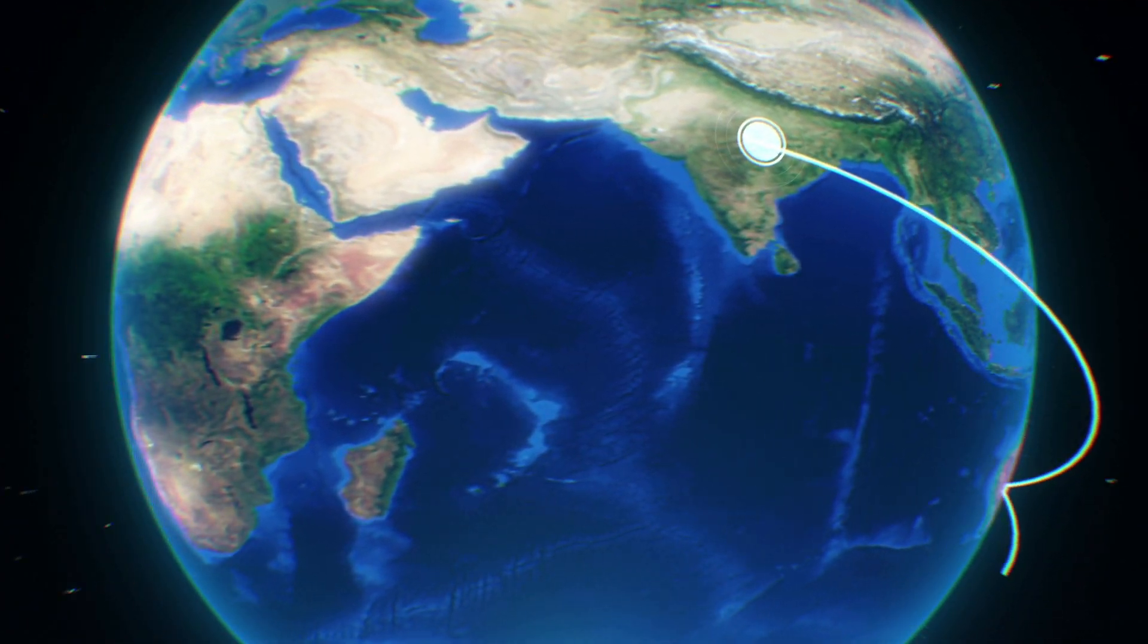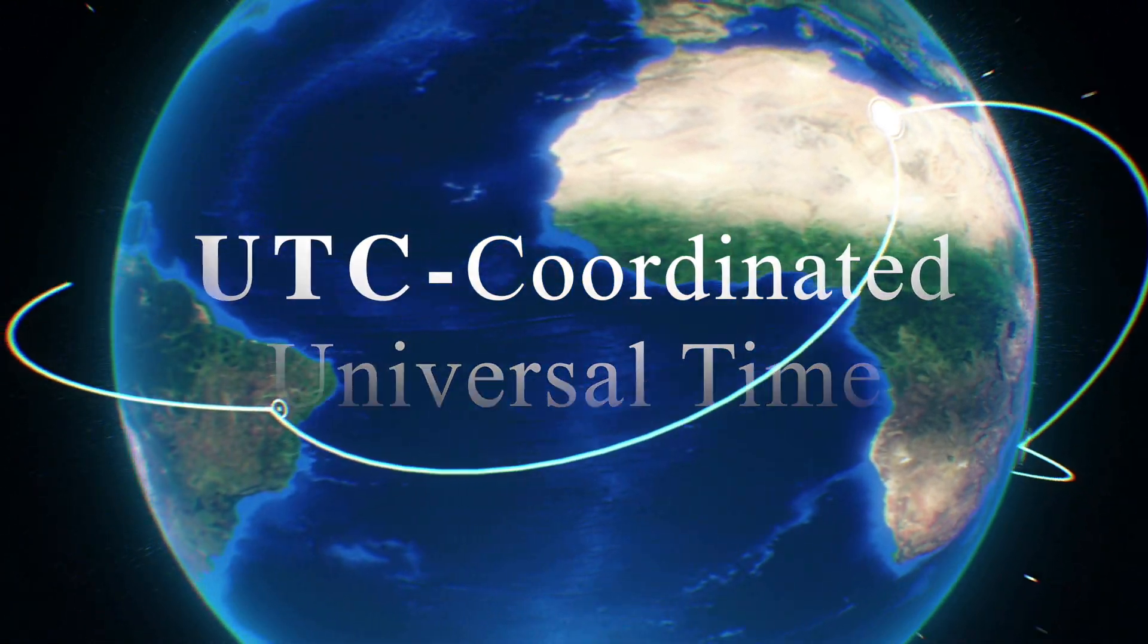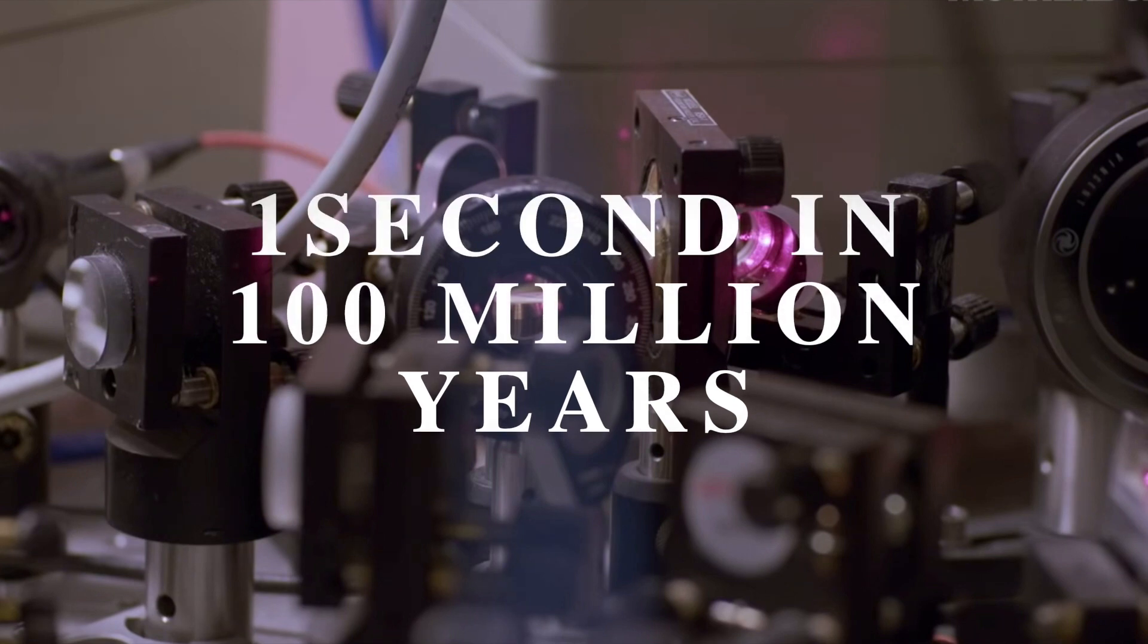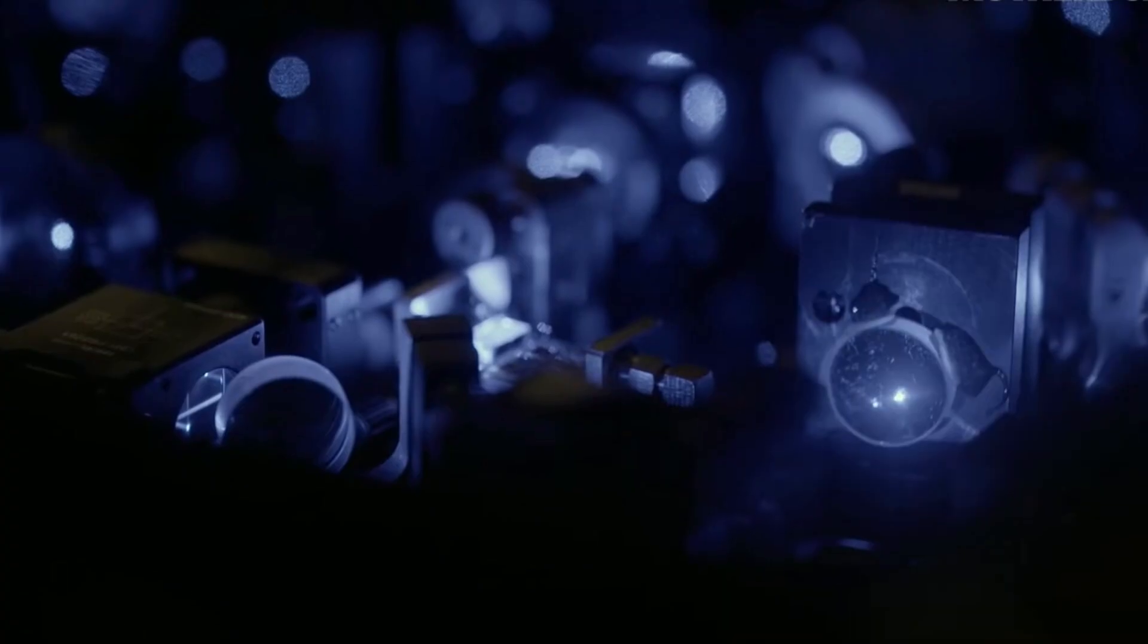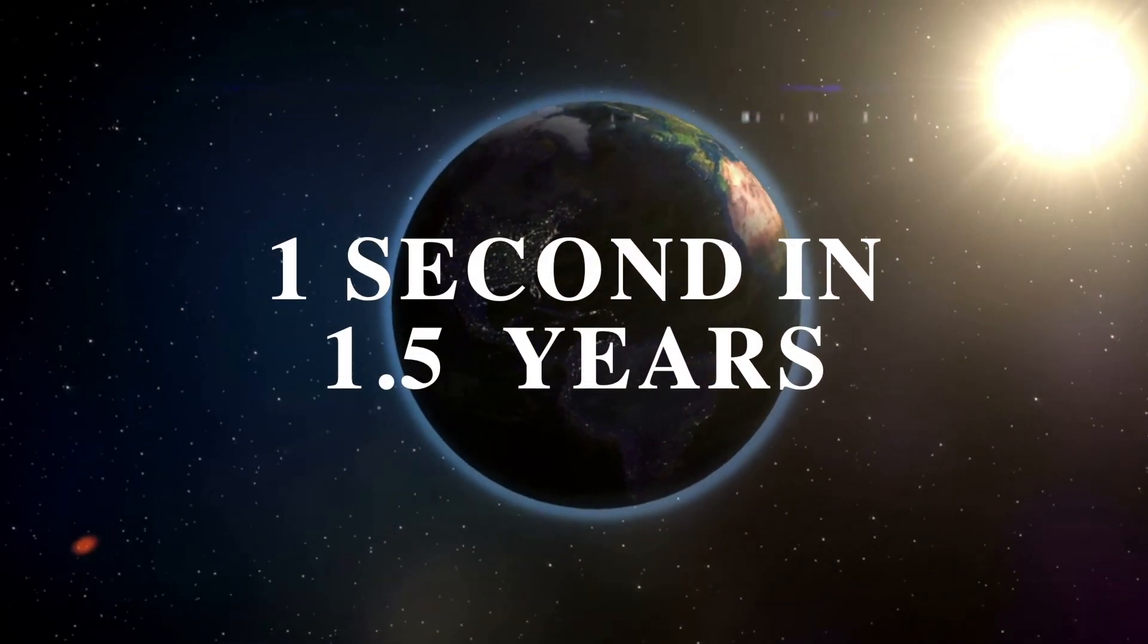The entire world follows the UTC or Coordinated Universal Time, which is measured with the help of an atomic clock. The fact that atomic clocks only deviate by one second in 100 million years puts us all in a tough spot when the year increases by one second on average every 1.5 years.